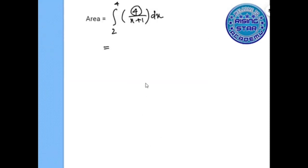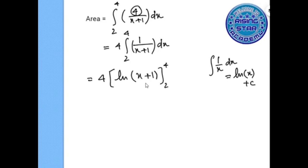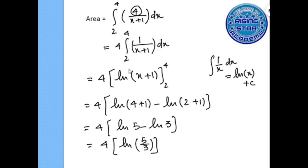Since 4 is a constant, we write it outside the bracket. So we have 4 times the integral from 2 to 4 of 1 over x plus 1 dx. We know that the integral of 1 over x is ln x, so applying the same rule, this becomes 4 times ln of x plus 1, evaluated from 2 to 4. Substituting, we get ln of 5 minus ln of 3.